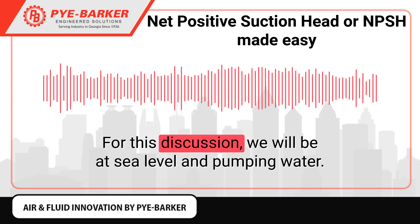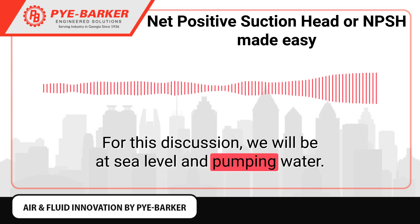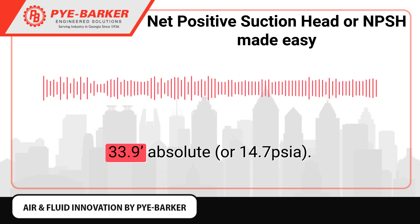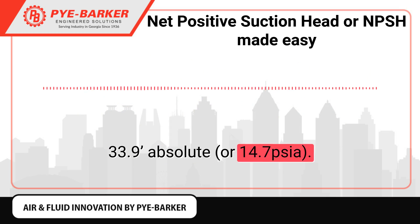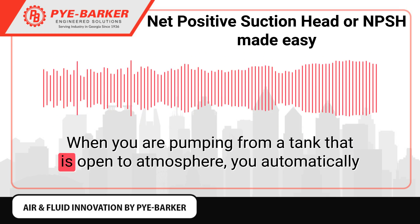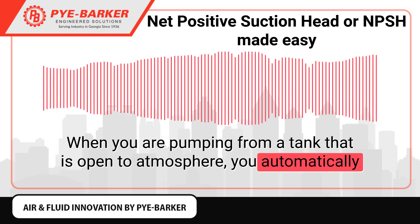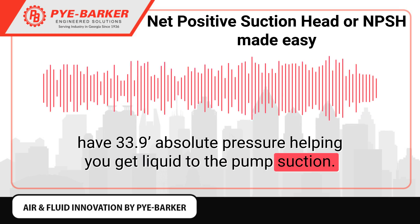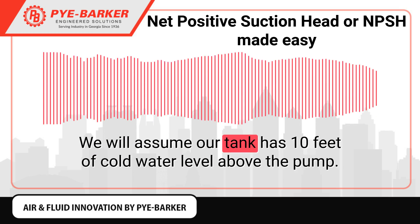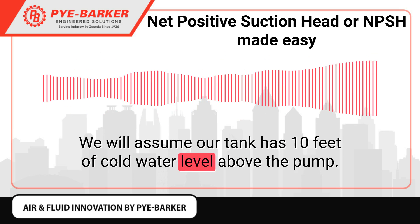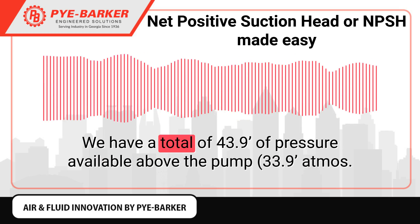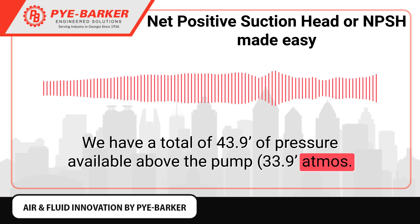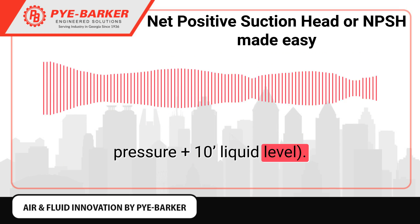For this discussion, we will be at sea level and pumping water. At 0 feet elevation, sea level, the atmospheric pressure is 33.9 feet absolute. When you are pumping from a tank that is open to atmosphere, you automatically have 33.9 feet absolute pressure helping you get liquid to the pump suction. We will assume our tank has 10 feet of cold water level above the pump, giving us a total of 43.9 feet of pressure available — 33.9 atmospheric pressure plus 10 feet of liquid level.